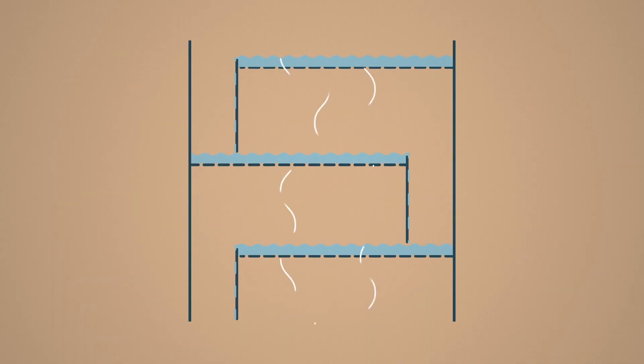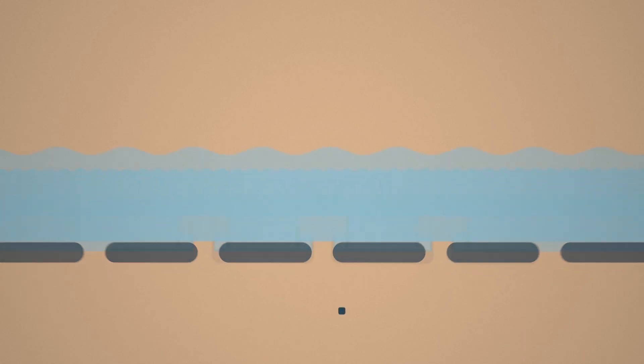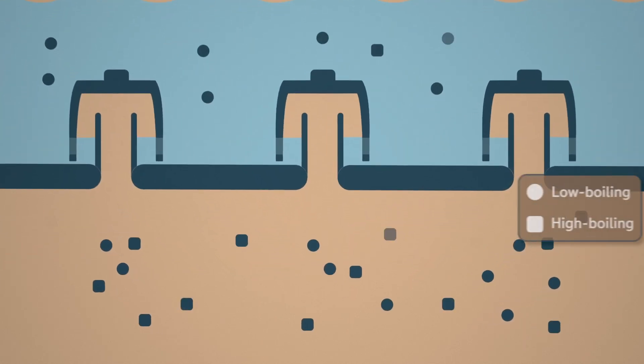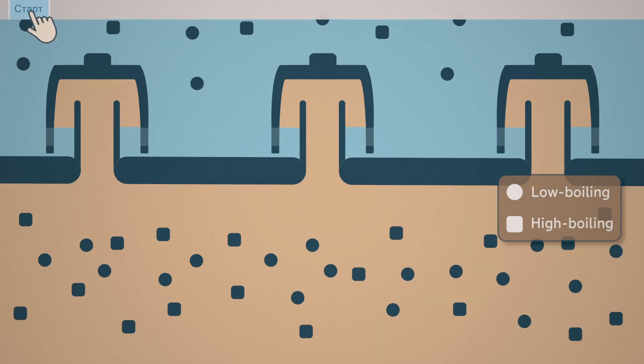The main functional part of a fractionator is the contacting device, where the heat and mass exchange occurs between the counter non-equilibrium flows of vapor and liquid. To figure it out, let's assume that the vapor at this level consists halfway of low boiling and high boiling component with a temperature of 130 degrees.